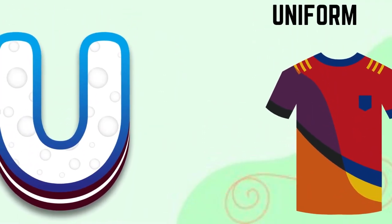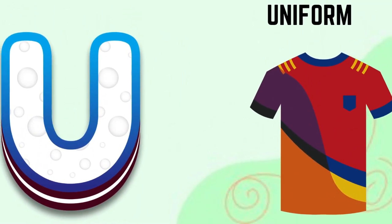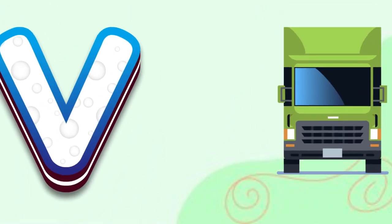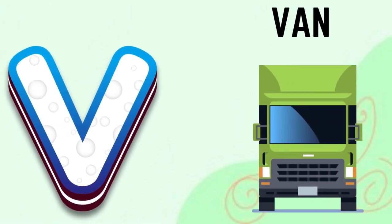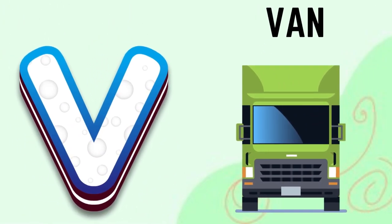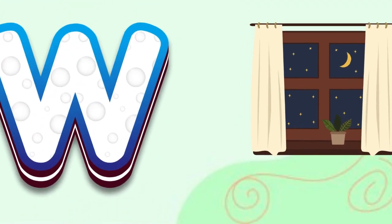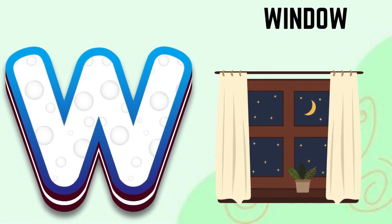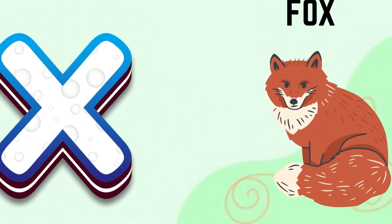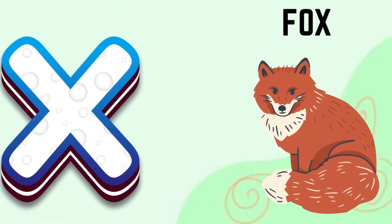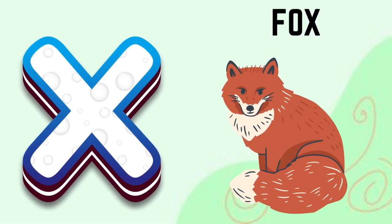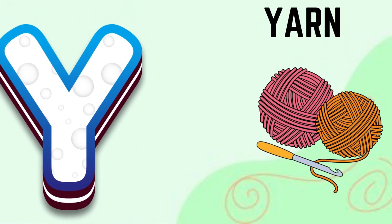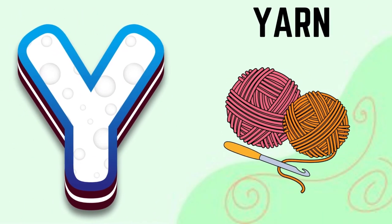U for uniform, V for violin, W for window, X for fox, Y for yarn.